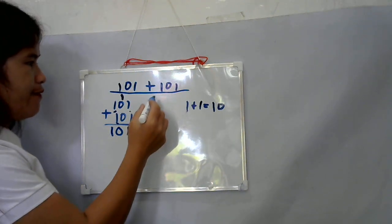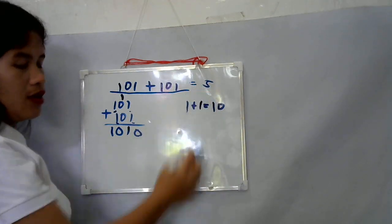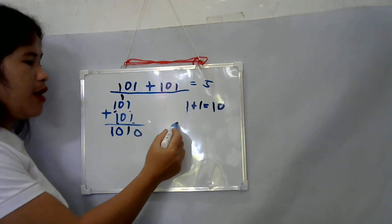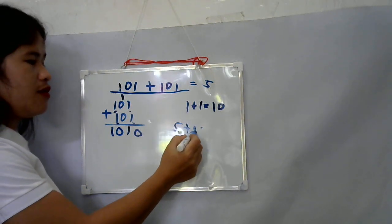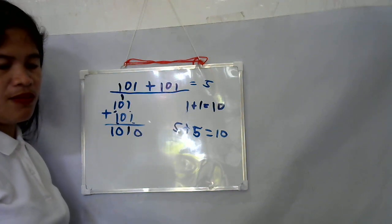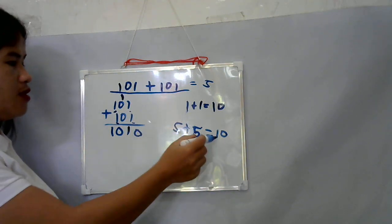five. So five plus five, as we all know, is ten. So the decimal number is this one.